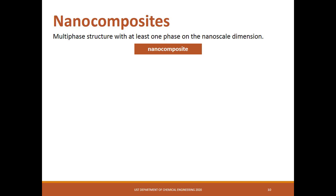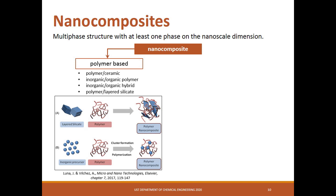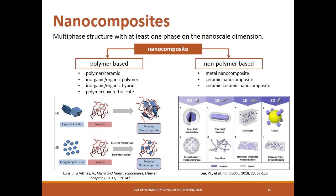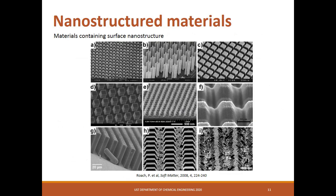If a nanomaterial is composed of two or more compounds with at least one phase on the nanoscale dimension, it is called nanocomposites. Nanocomposites can be classified into two: the polymer-based, where at least one of the components is polymer; and non-polymer-based, where all the components are either metal or ceramics. If a material has a surface structure or pattern in nanoscale dimension, it is called nanostructured materials.